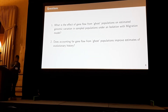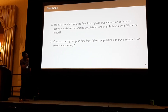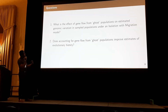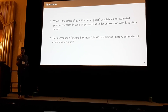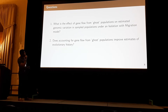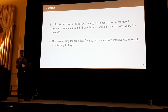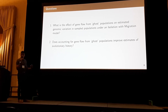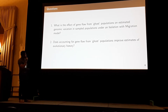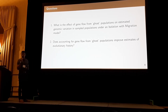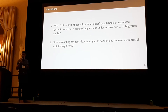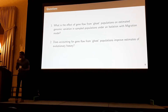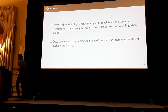What we wanted to figure out — what Melissa wanted to do — was determine the effect of unsampled ghost populations on genomic variation in a sampled population under an isolation with migration model, which I've been working on for a few years. And also, if we account for unsampled variation or gene flow from ghost populations, does that actually improve our estimation of evolutionary history?